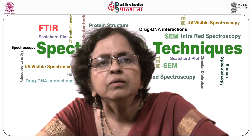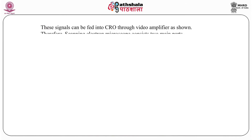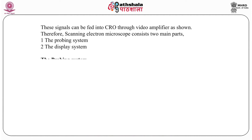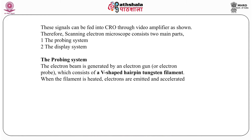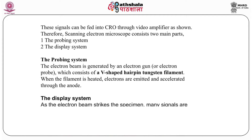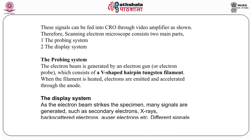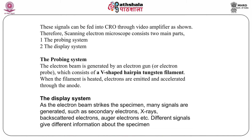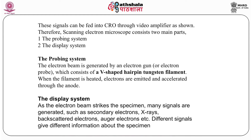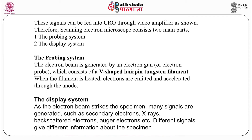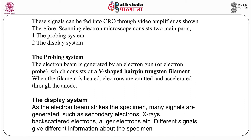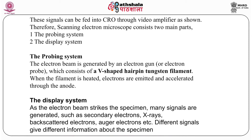In SEM, the signals can be fed into a CRO and the image is amplified. There are two basic components: a probing system and a display system. In the probing system, the electron beam is generated by an electron gun consisting of a V-shaped hairpin tungsten filament; the filament is heated so electrons are emitted and accelerated through the anode. In the display system, after electrons hit the specimen, many signals are generated: secondary electrons, X-rays, and backscattered electrons.